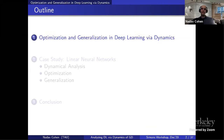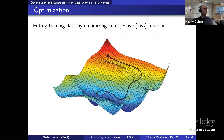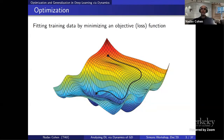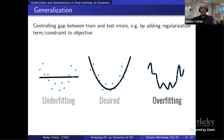I'll start by setting the stage, laying out the case that I will try to make today. In the basic supervised learning setup, optimization typically means the process of minimizing some objective or loss function in order to fit training data. Generalization refers to controlling the gap between train and test errors, for example by adding some regularization term to the objective. Optimization and generalization behave very differently in deep learning from how they behave in classical machine learning.